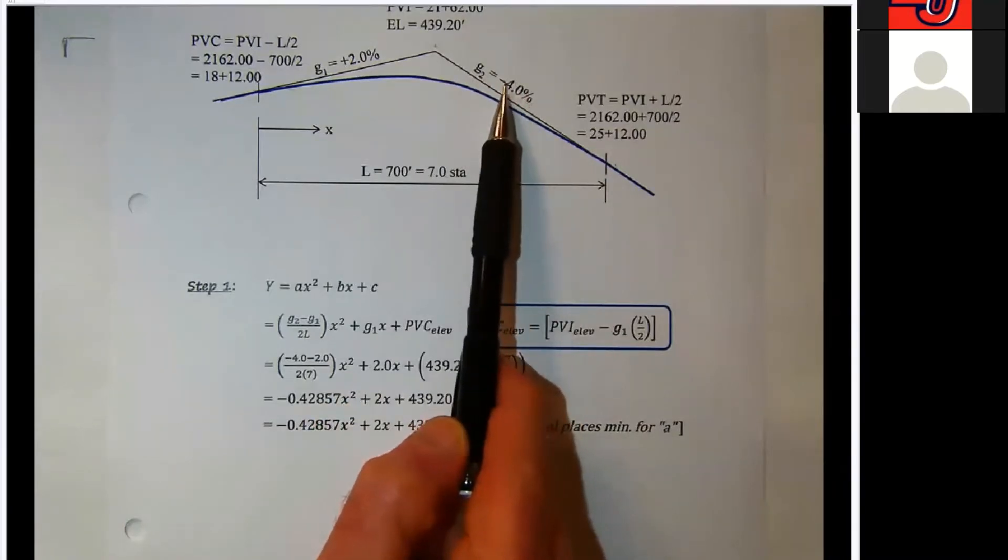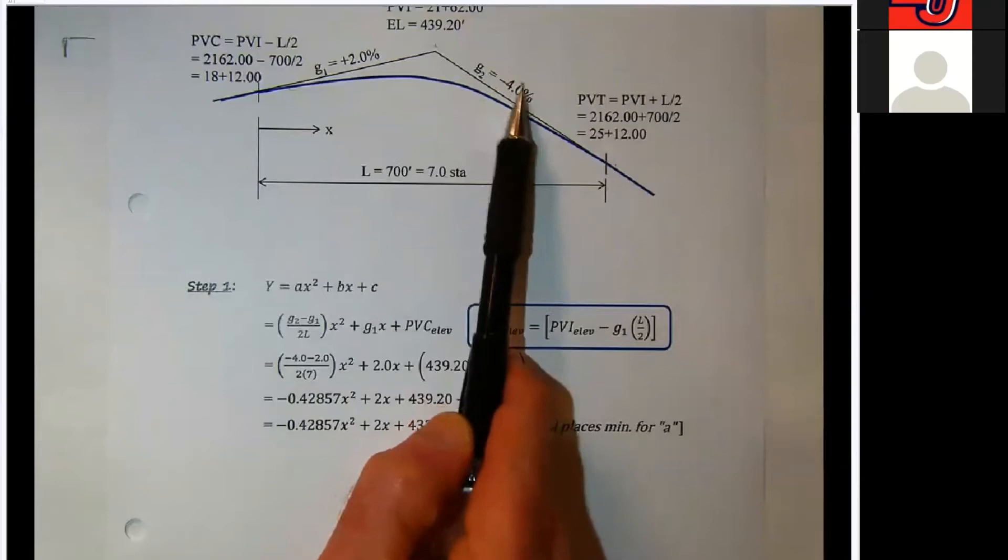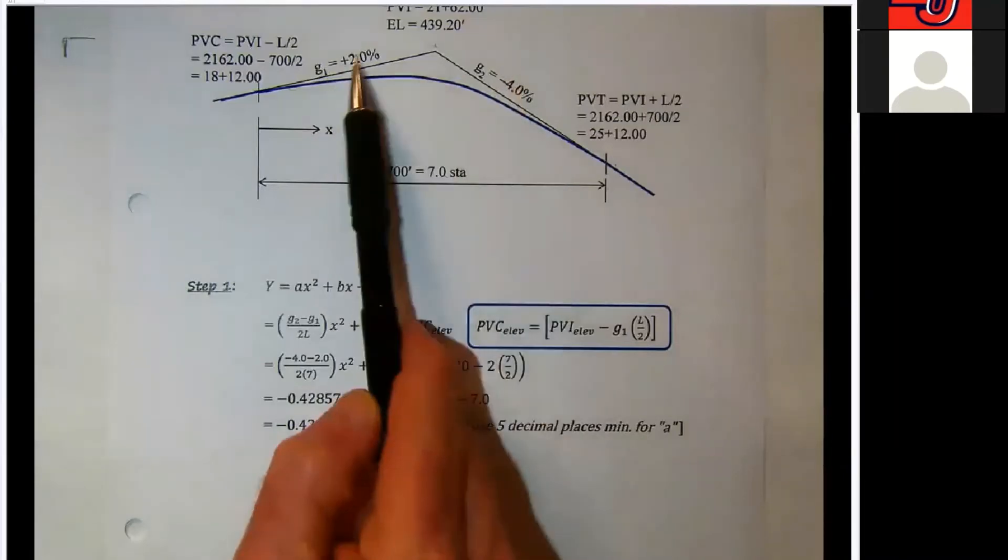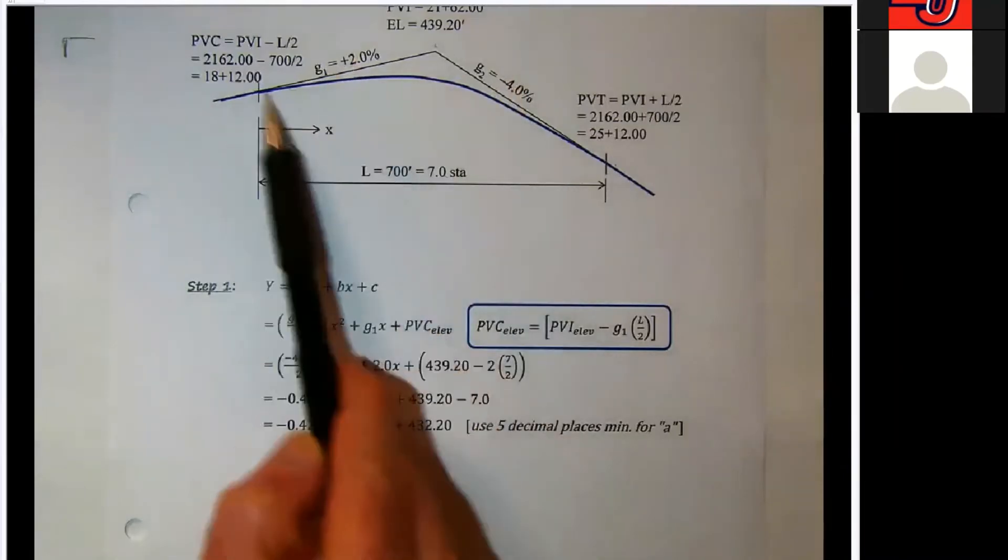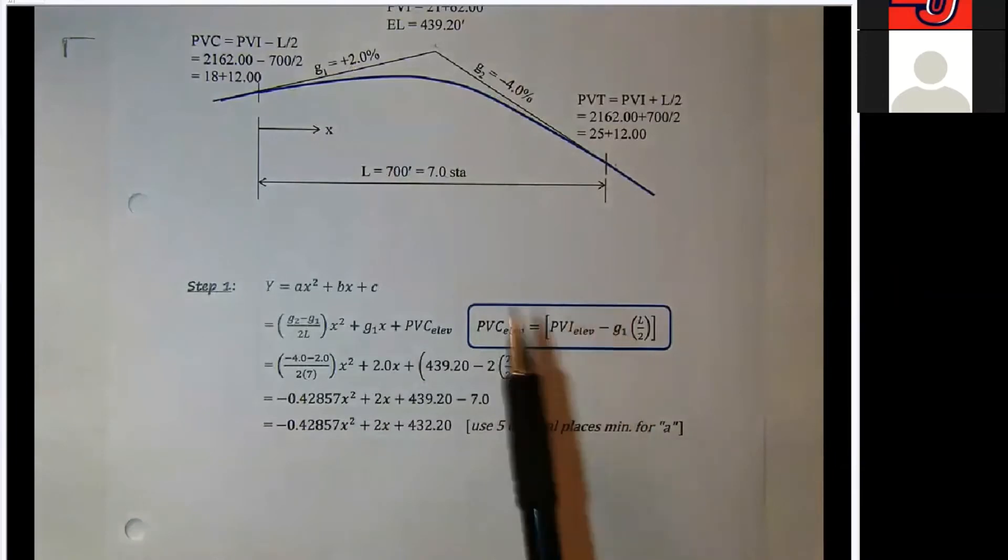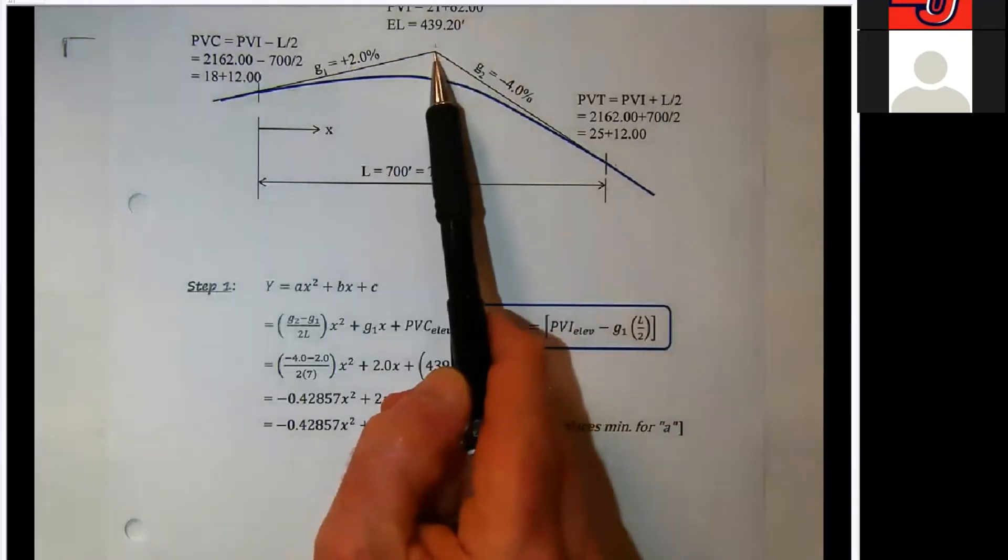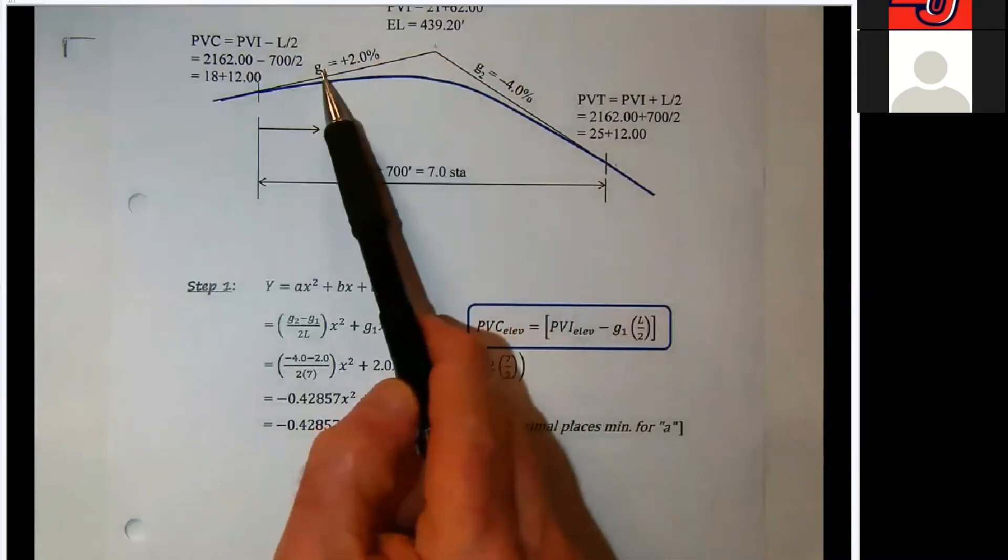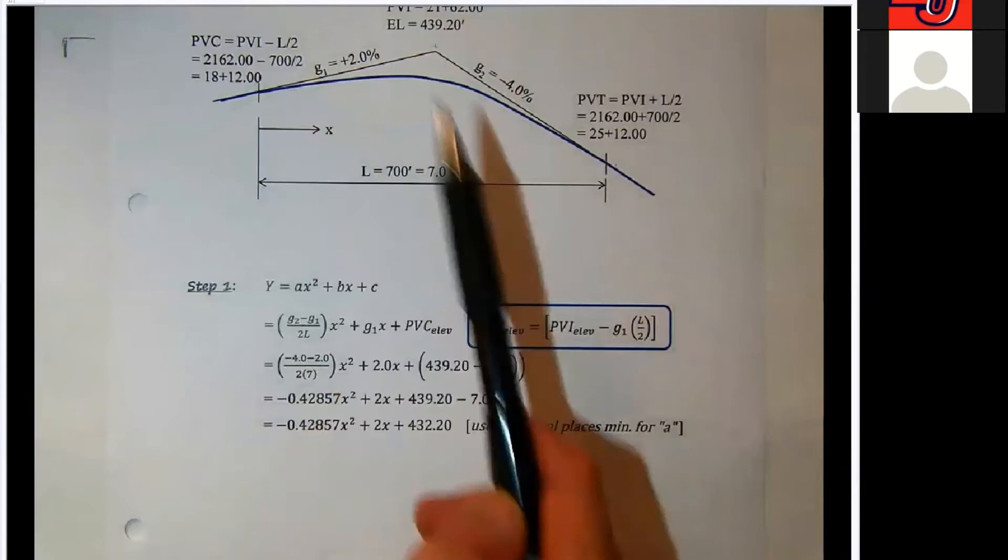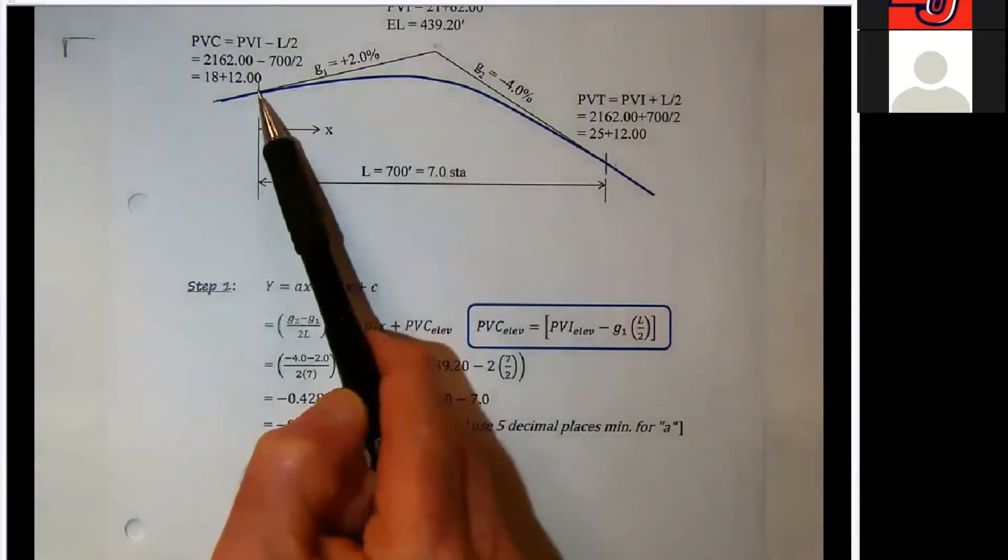You'll notice that G2 here, the minus sign goes with the grade, that's not an algebraic calculation that I've got to do there. The minus goes with the grade, just as it would if G1 was downhill. So this automatically takes that into account, but you can just visually go from the PVI back down 2% at 350 feet and calculate the elevation at the PVC.